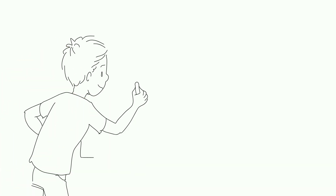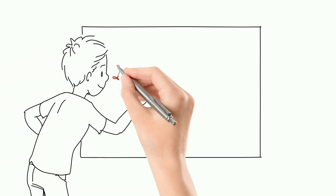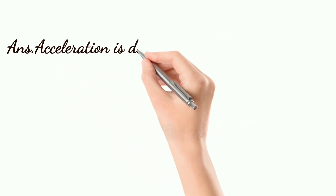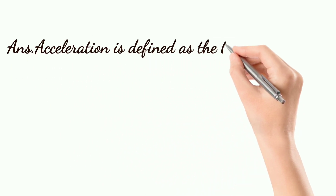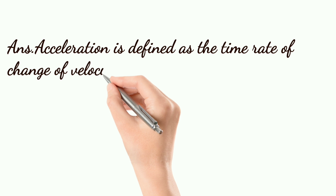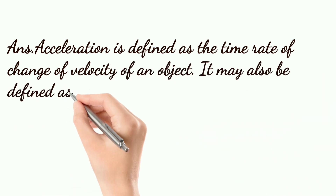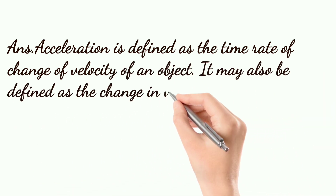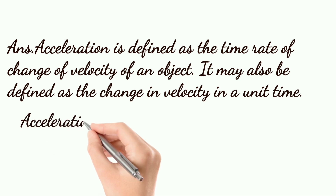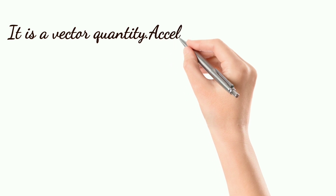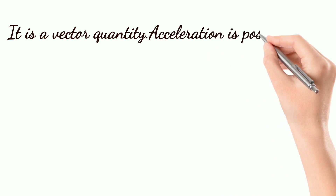Define acceleration. Acceleration is defined as the time rate of change of velocity of an object. It may also be defined as the change in velocity in a unit time. So acceleration is equal to change in velocity upon time taken. It is a vector quantity.